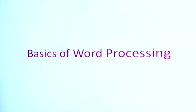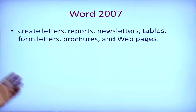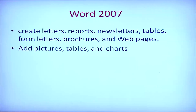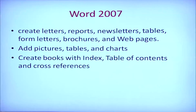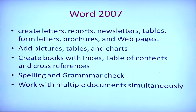Now let us start Word 2007. It has many features. We can create letters, reports, newsletters, tables, form letters, brochures, and web pages using Word 2007. We can also add pictures, tables, and charts to Word documents. We can create books with index, table of contents, and cross references — these are created automatically. We can also perform spelling and grammar checks, work with multiple documents simultaneously, and print one or more copies of documents.